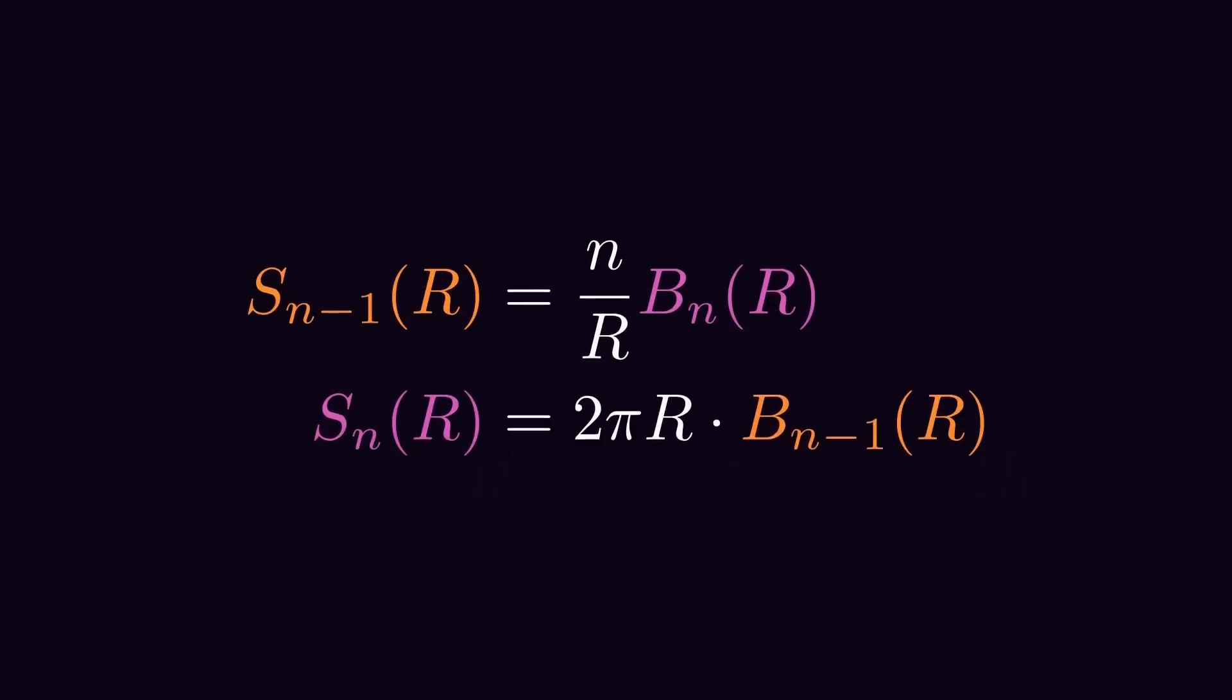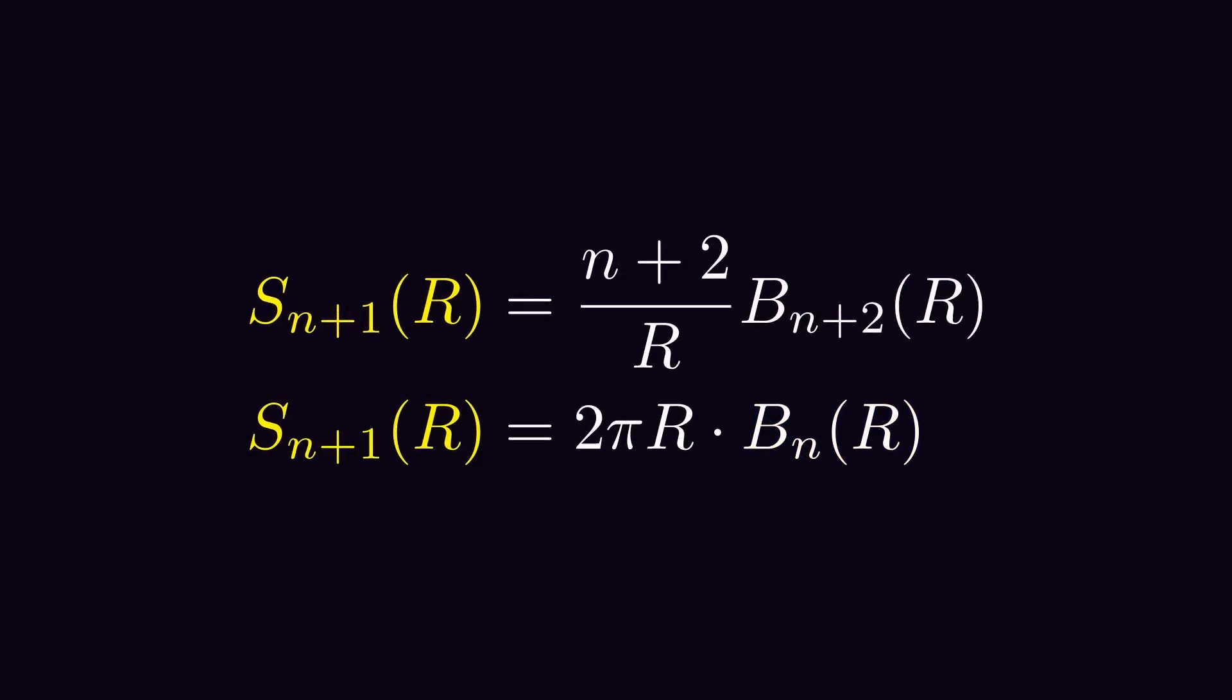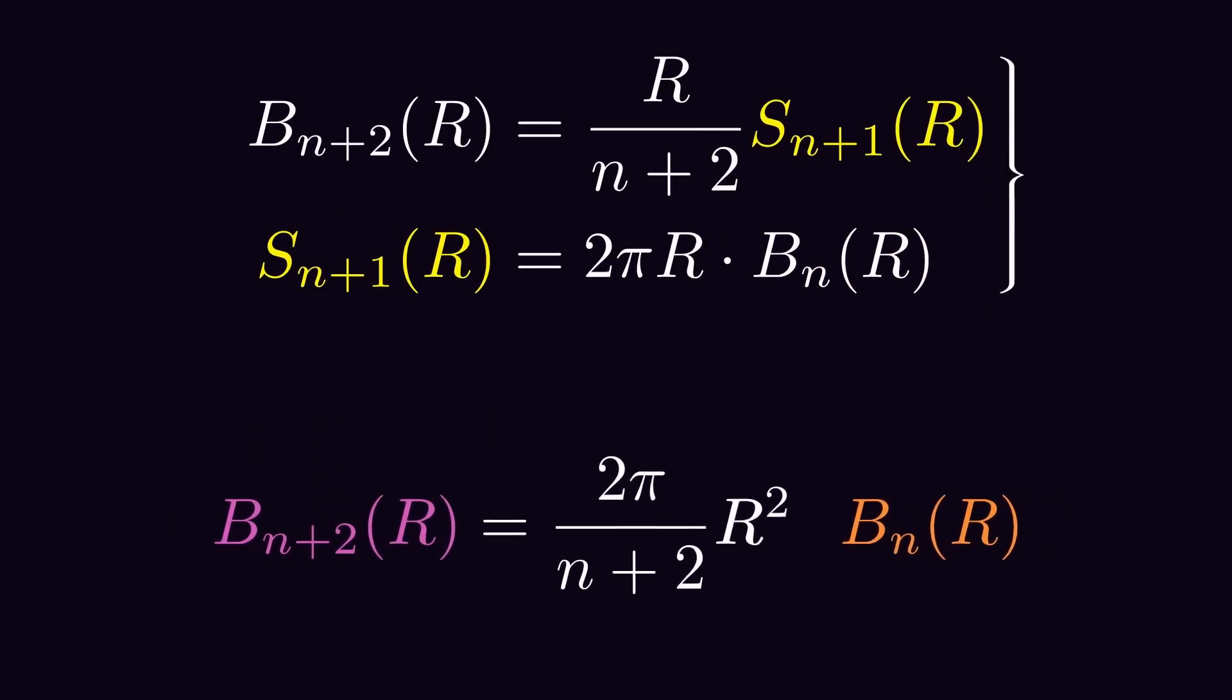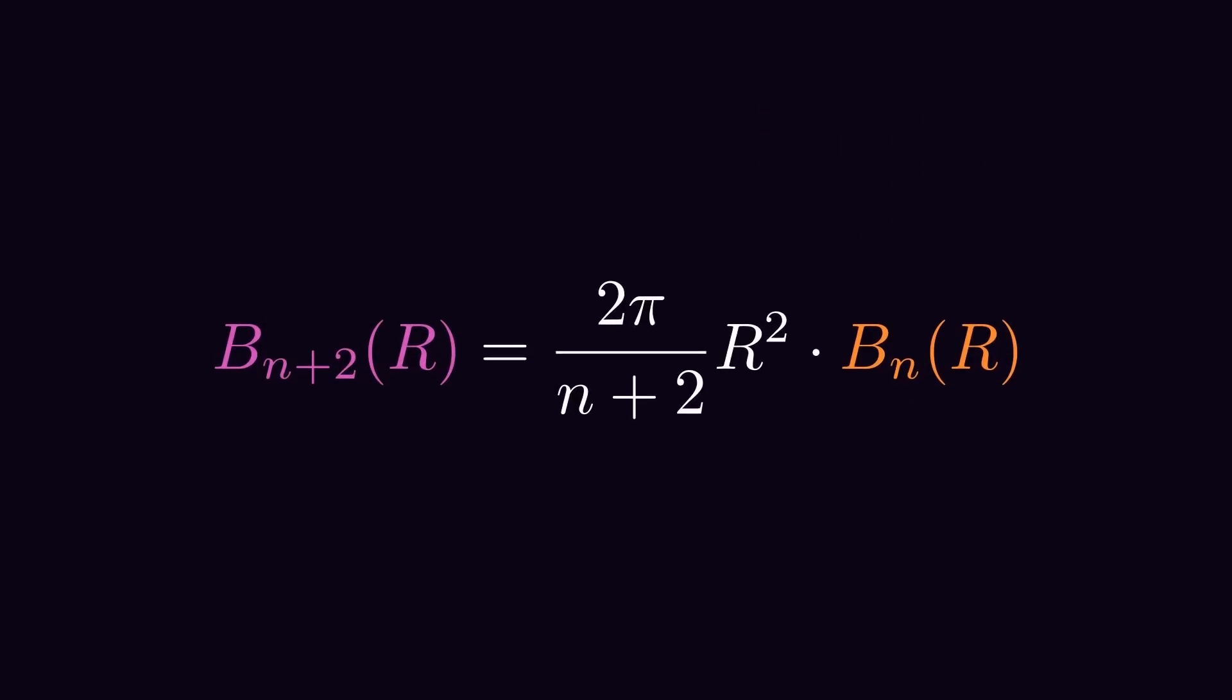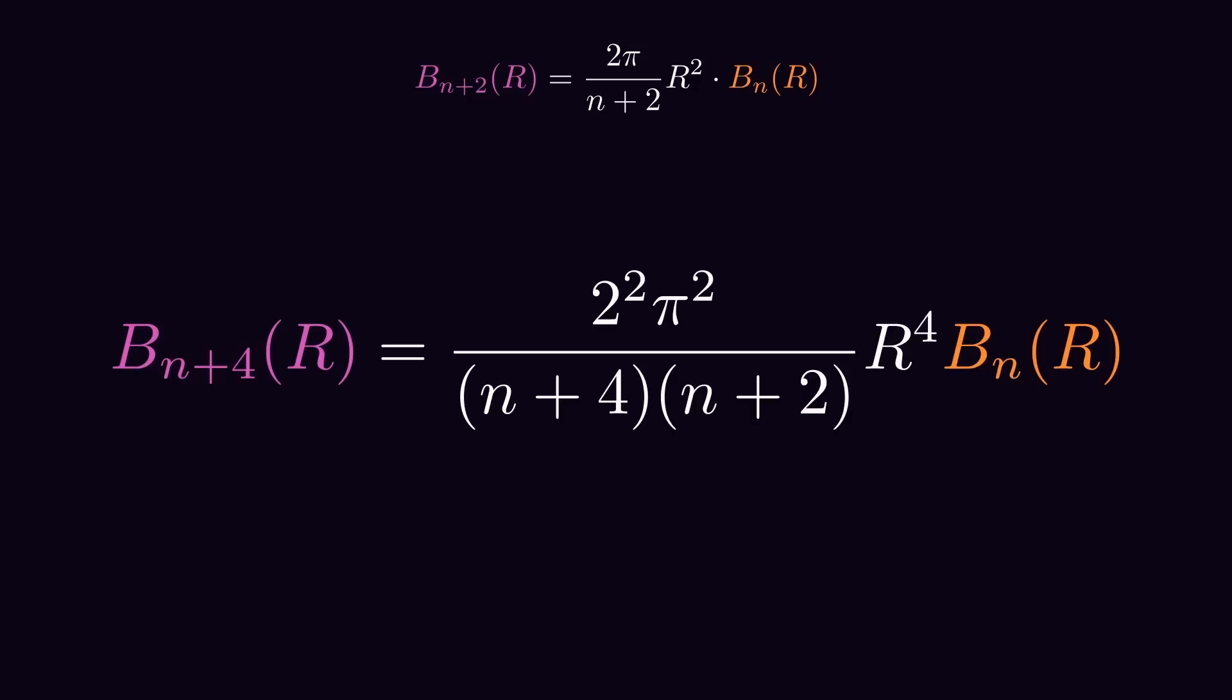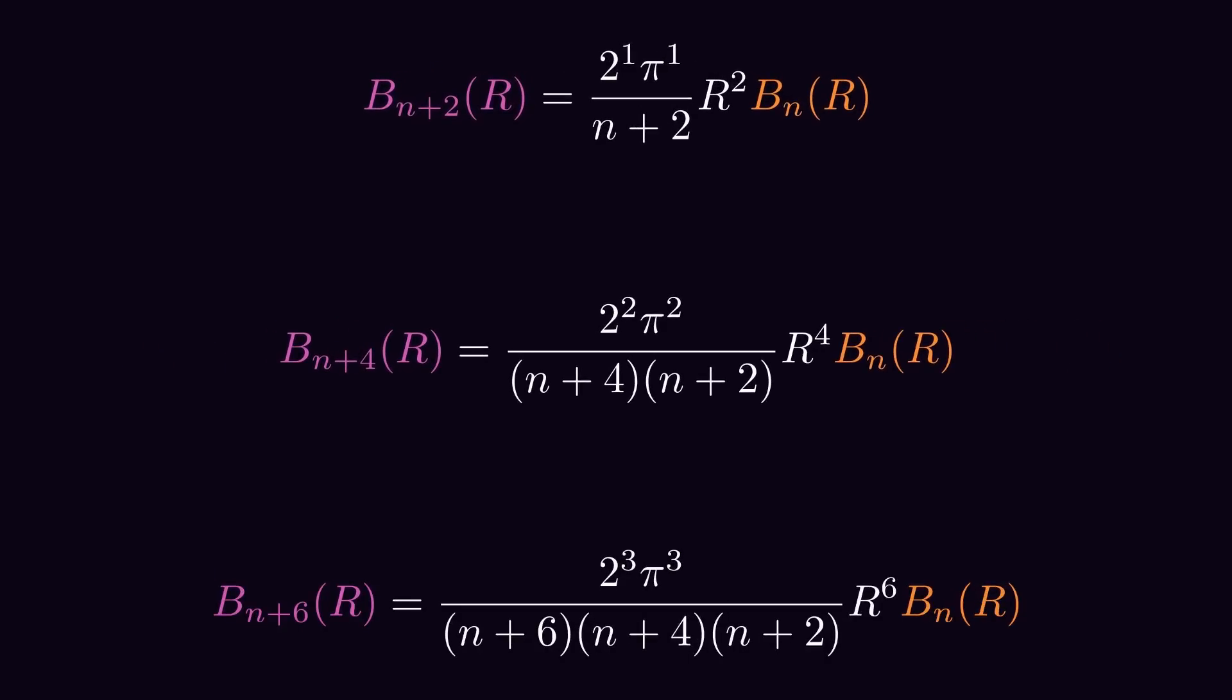So, combining our two recursive formulas, we can get a relation between Bn and Bn plus 2. So we could also express Bn plus 4 in terms of Bn. I've already written it in a kind of suggestive way. Because if you do the same thing again and express Bn plus 6 in terms of Bn, you can probably already see the pattern.